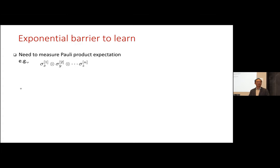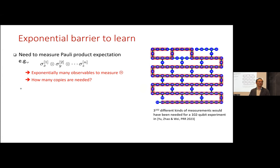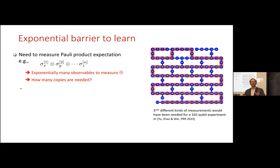There is an exponential barrier to learning, because naively we have to measure 3^n operators and take expectation values of many observables. As an example, in an experiment on the IBM quantum computer, we created an XXZ approximate ground state for 102 qubits. But we didn't do 3^102 different kinds of measurements, because our goal was to measure energy and only two-body terms were needed. If we had to do full tomography, it would have been impossible.